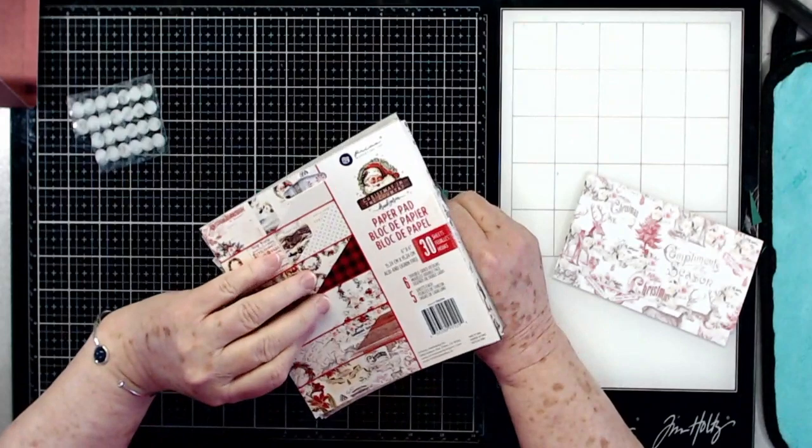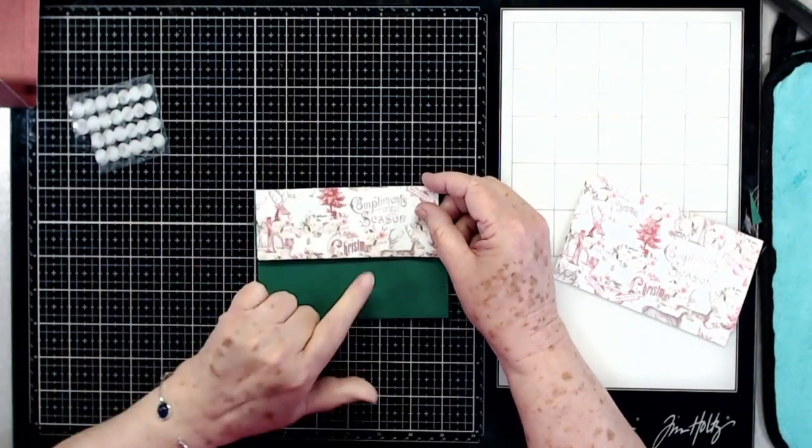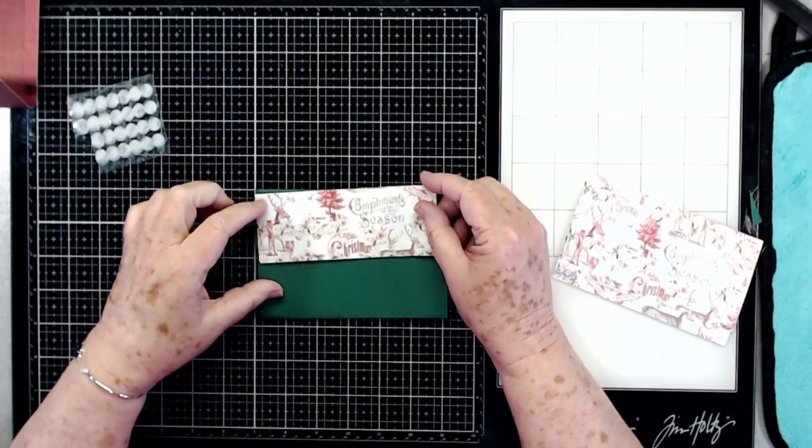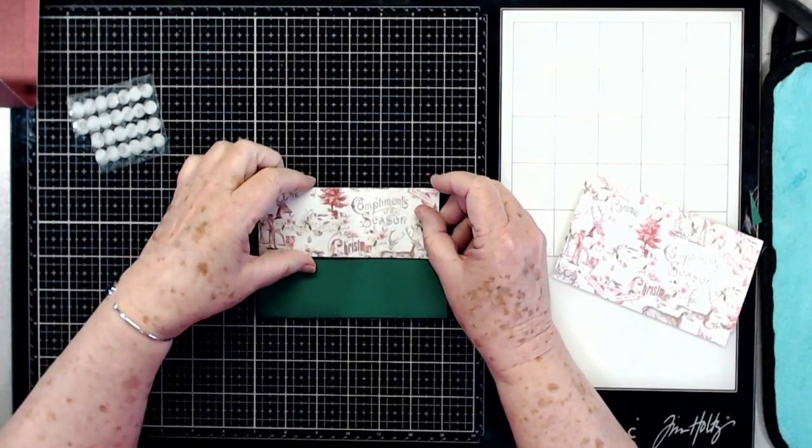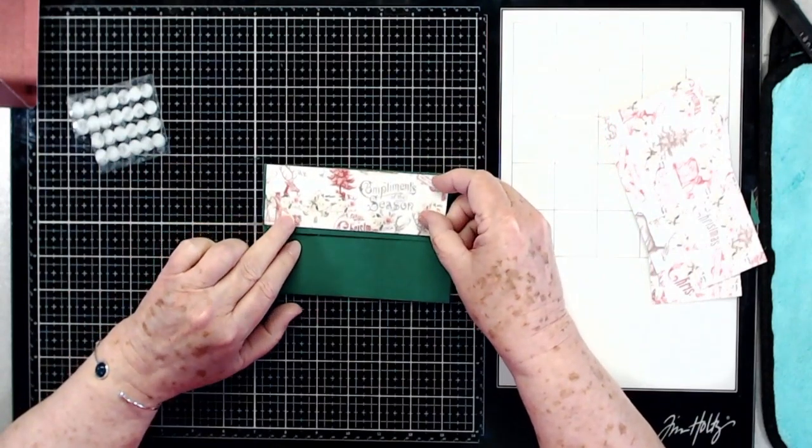I'm going to use some of our paper from - I know you've seen me use this in the last three or four projects - Christmas in the Country from Prima. It's got just a tiny bit of that green in there, so I'm going to try to pull that green out.